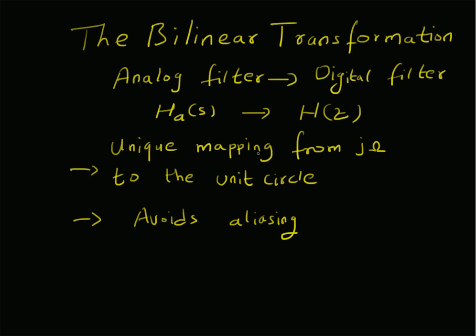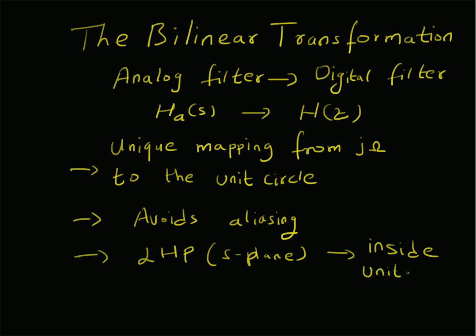Because of this unique mapping, all values of jω are mapped onto unique values on the unit circle, thus avoiding aliasing — in contrast to other transformations such as the impulse invariant transformation. The left-hand plane (LHP) of the s-plane maps onto the inside of the unit circle in the z-plane, and the right-hand plane (RHP) maps onto the outside of the unit circle.